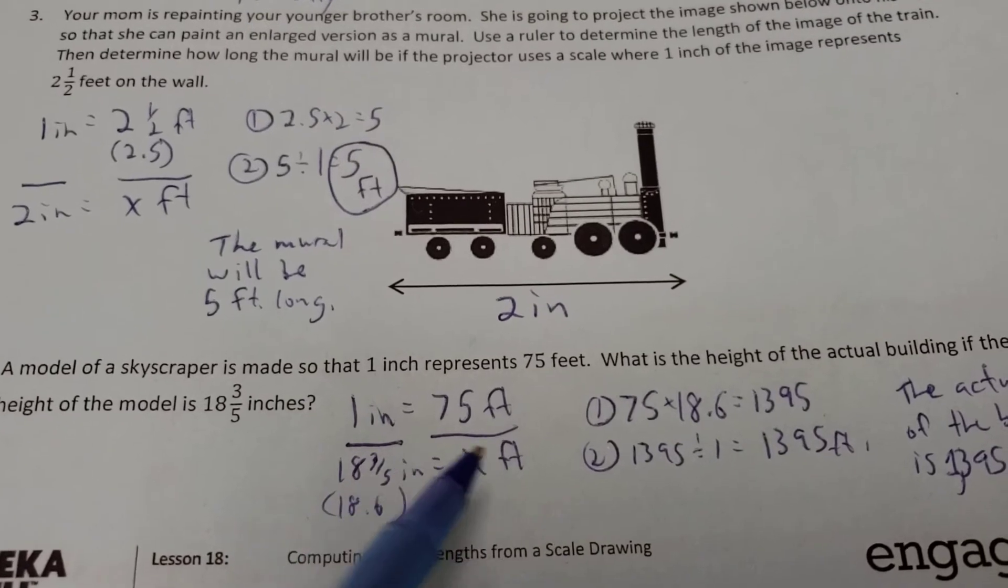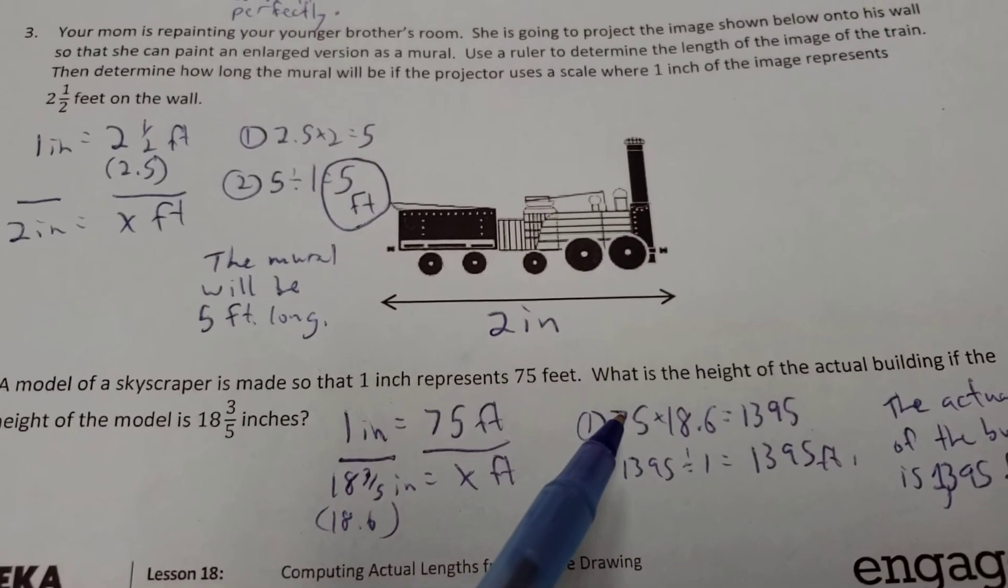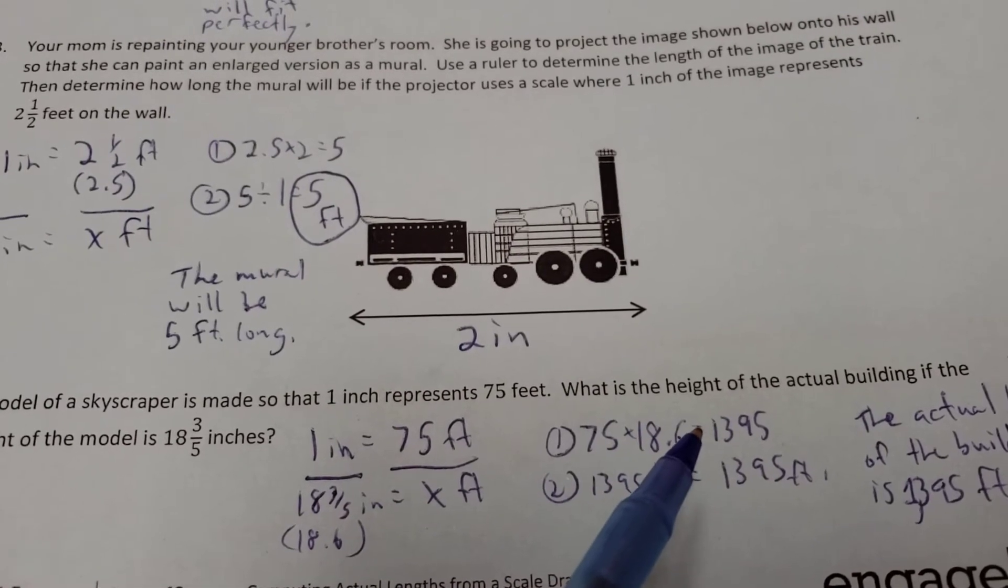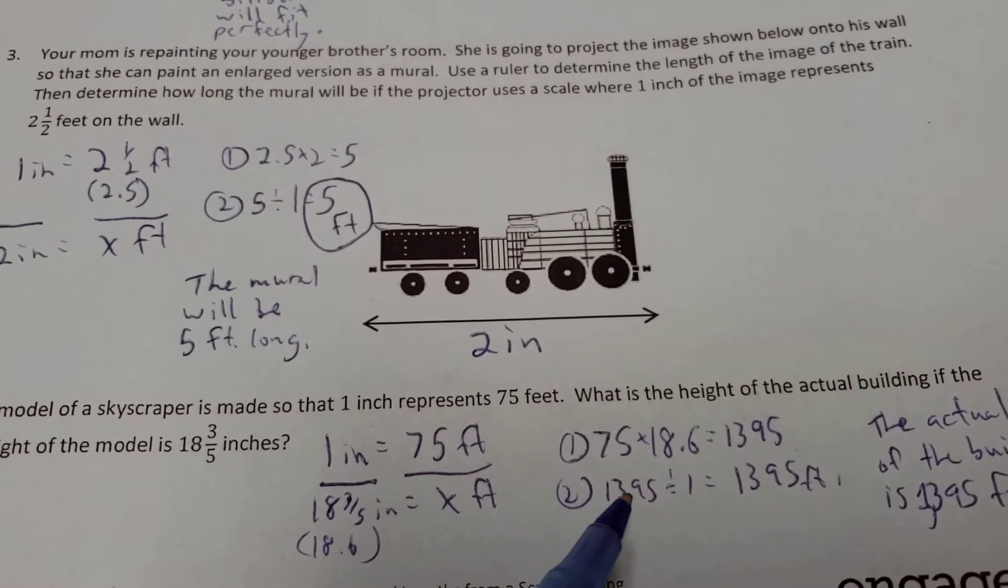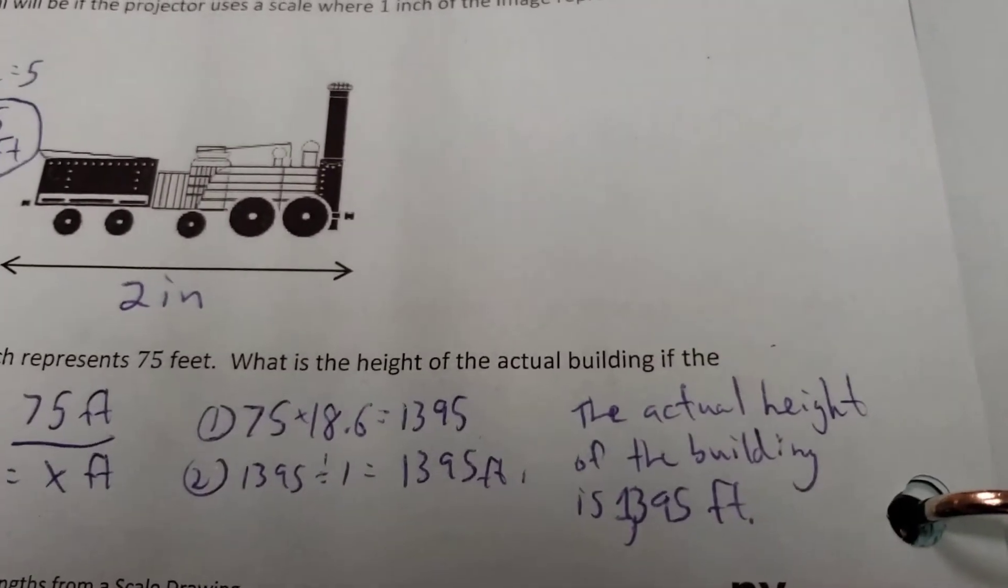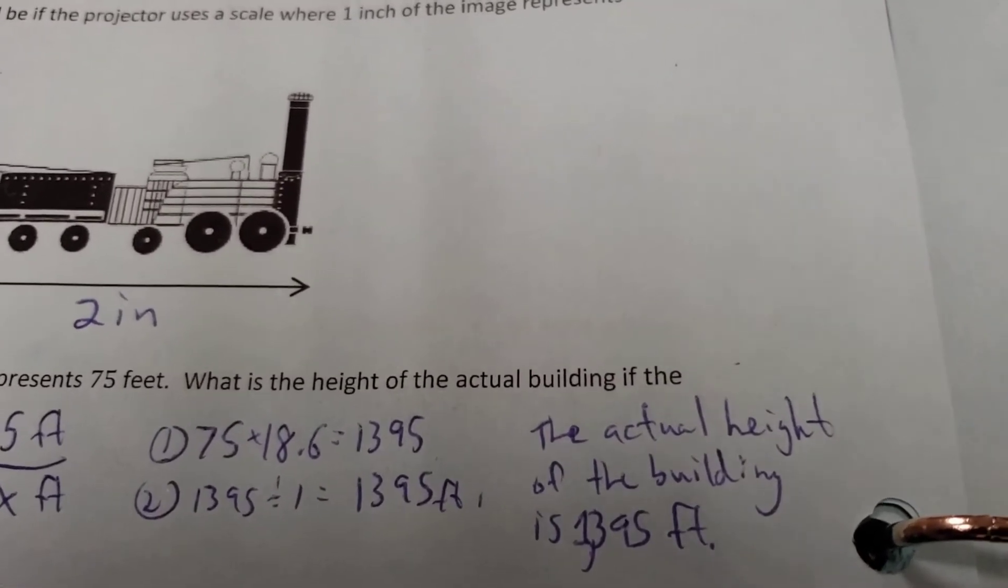I can cross multiply 18 and 18, or the 75 and the 18.6. I get 1395. And then take my answer, divide it by my leftover number. 1395 divided by one gives me 1395. Actual height of the building is 1,395 feet.